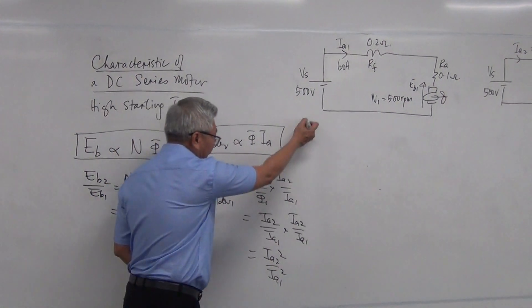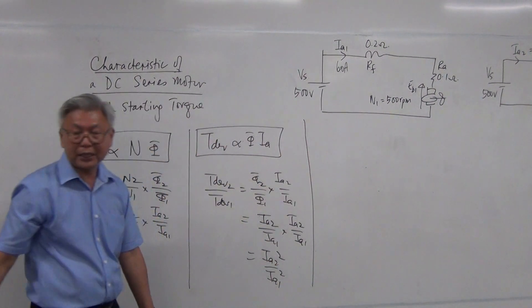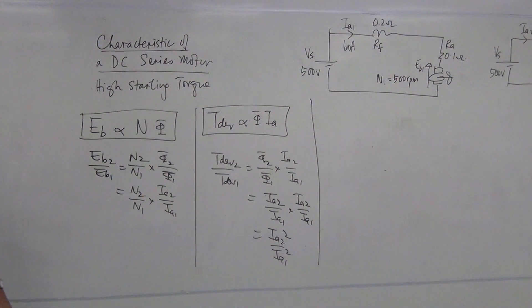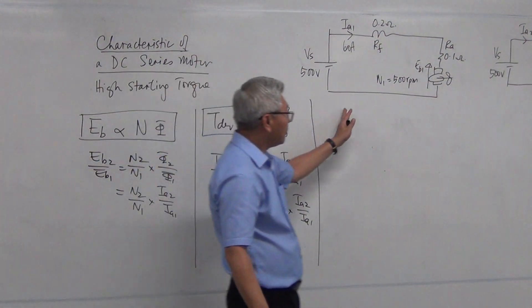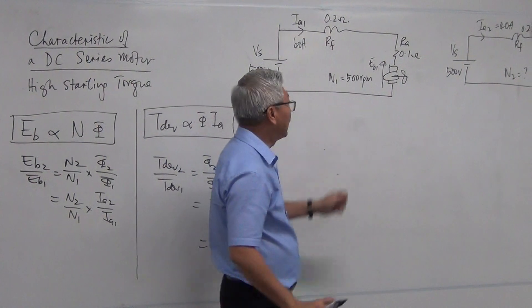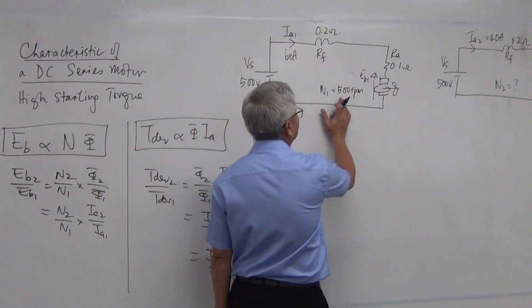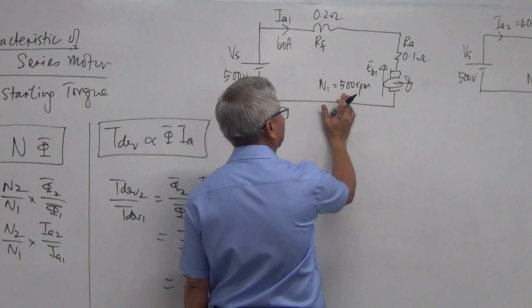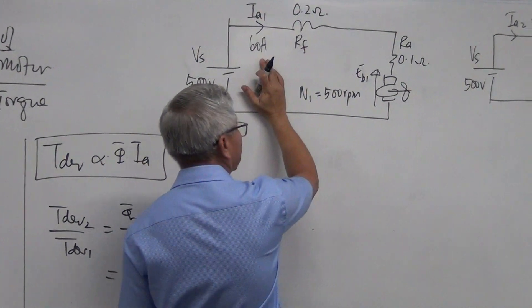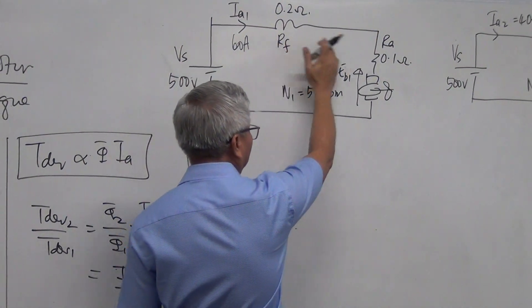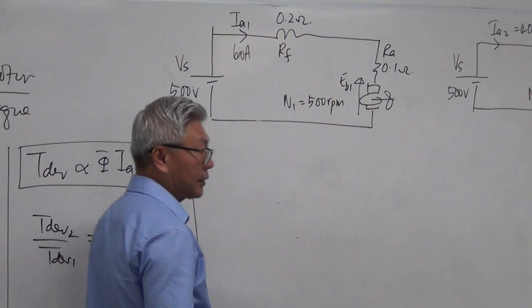Okay, so with that now, let's move on to our working examples of a DC series motor. So in this series motor here, with a certain torque, it is running at 500 RPM, the current drawn is 60 ampere and RF and RA are respectively as such.